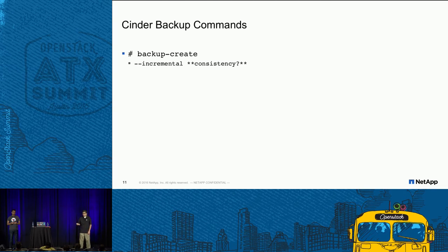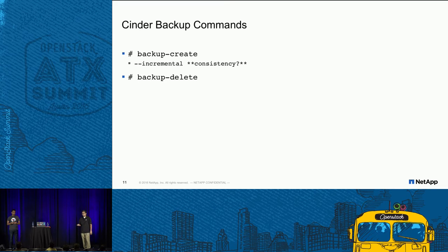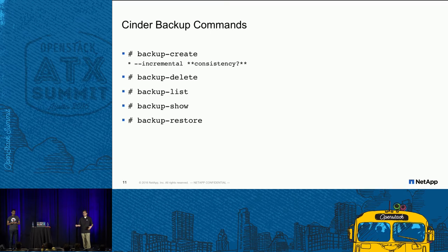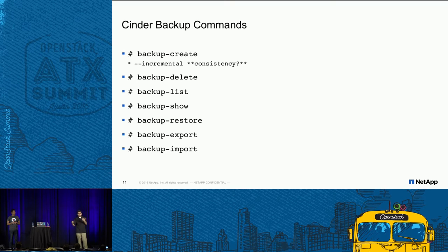The key backup commands: 'backup create' creates a backup, which can also be done incrementally. 'backup delete' deletes a backup. 'backup list' lists all backups. 'backup show' displays details including a timestamp. 'backup restore' restores from a backup. You can also export and import backup metadata — if an availability zone goes down, you can re-import backup metadata into another availability zone and leverage a backup target like AltaVault.